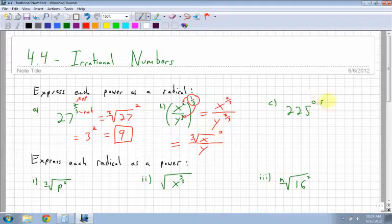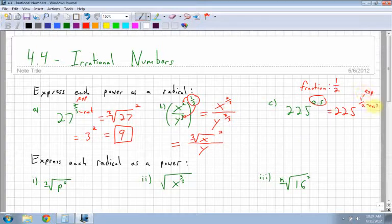Next, I have this exponent here. Uh-oh, it's not a fraction. So what I want to do is I want to take this and convert it to a fraction. So 0.5 as a fraction is 1 half. So this ends up being 225 to the power of 1 half. All the same rules apply. Exponent is the top, root is the bottom. So this time I would have square root of 225 to the power of 1. So I know that the square root of 225 is 15.